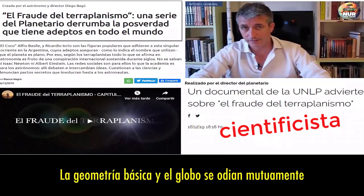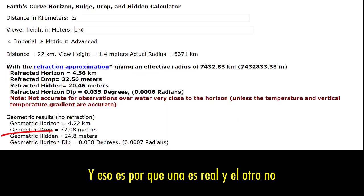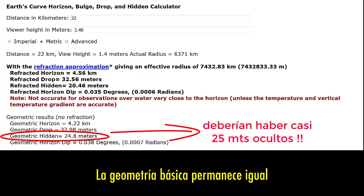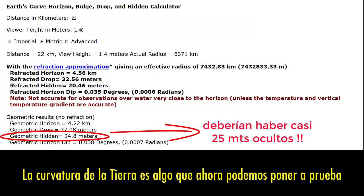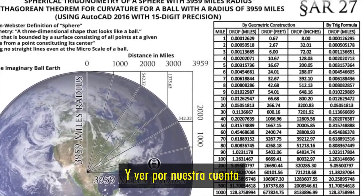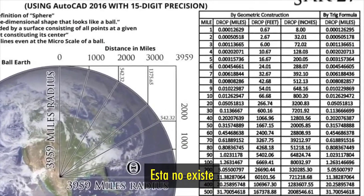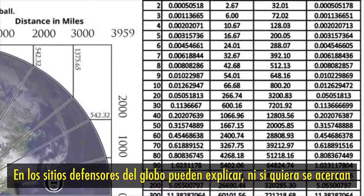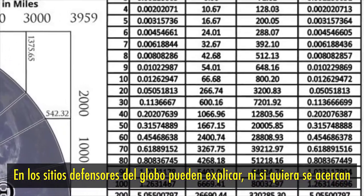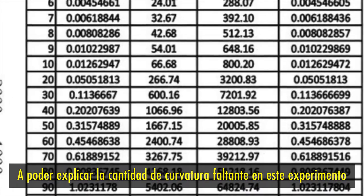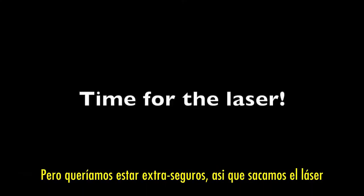Basic geometry and the globe hate each other, because one is real and one is not. Basic geometry remains the same. The curvature of the Earth is something we can now test and see for ourselves — it does not exist. Even the most gracious refraction calculations on the most globe-defending sites cannot account, cannot even come close to accounting for, the amount of curvature that is missing in this experiment. But we wanted to be extra sure, so we got out the laser.